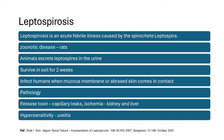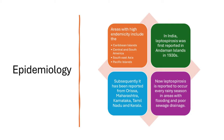How does leptospirosis cause a problem? The leptospira can release a toxin and cause capillary leaks. It can affect tissues and cause ischemia, especially of the kidney and liver. Later, after a few weeks, it can cause immune-mediated problems, particularly hypersensitivity reactions — of which uveitis is one of the commonest.